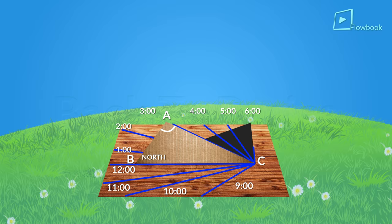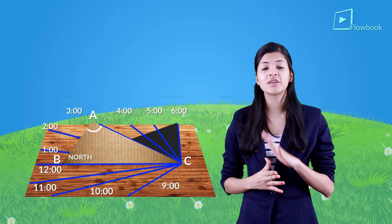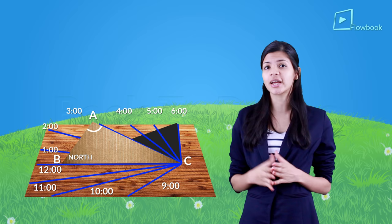Now your sundial is ready. You can tell time by looking at the shadow on the sundial. Make sure that the base is always in the north-south direction so that you can tell the time correctly.